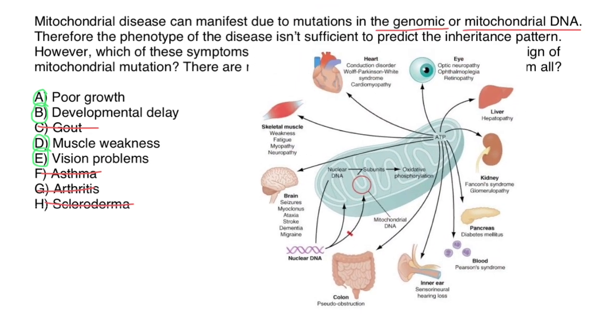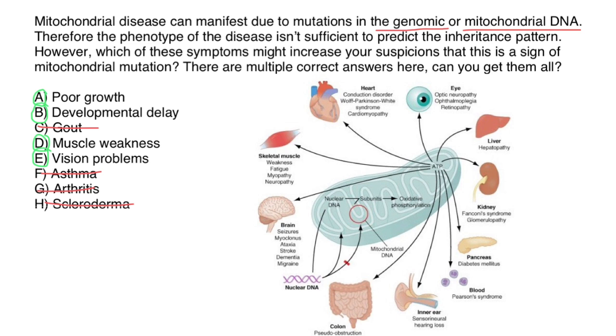Also take a look at this picture, which also shows different conditions which are caused by malfunctioning mitochondria. And again, it may be caused by mitochondrial DNA mutations, but also by nuclear DNA mutations. And as you understand now, the pattern of inheritance is going to be different.